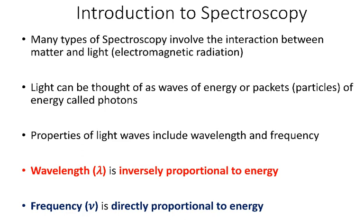Many types of spectroscopy involve the interaction between light, or electromagnetic radiation, and matter. Two important properties of light are the wavelength and the frequency. It's important to remember that the wavelength is inversely proportional to the energy, and that the frequency is directly proportional to the energy.